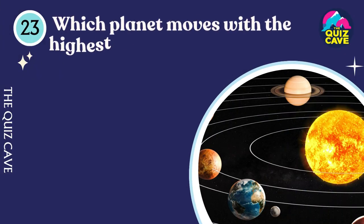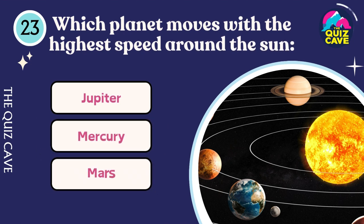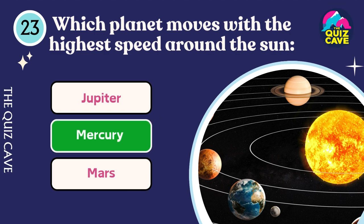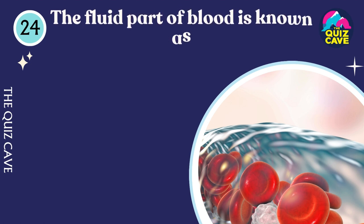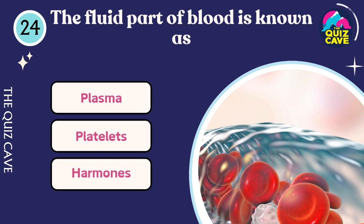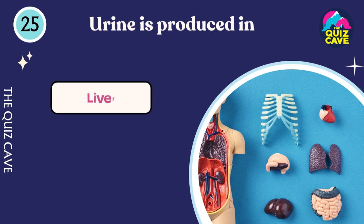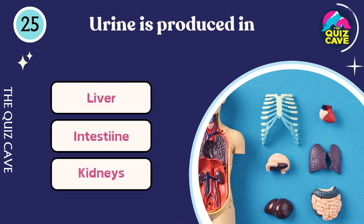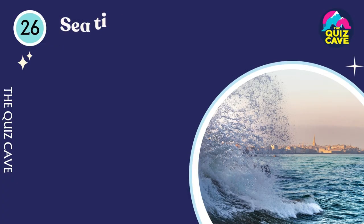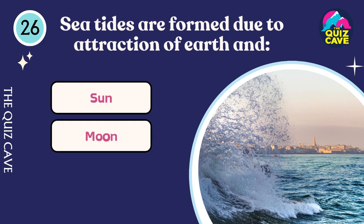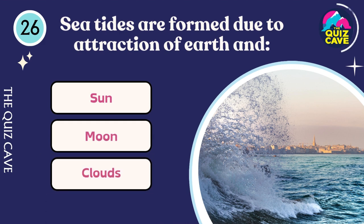Which planet moves with the highest speed around the Sun? Mercury. The fluid part of the blood is called plasma. Urine is produced in the kidneys. Tides are formed due to the attraction of Earth and the Moon.